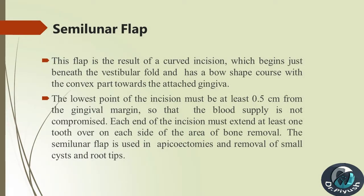Semilunar Flap: This flap is the result of a curved incision which begins just beneath the vestibular fold and has a bow-shaped course with the convex part towards the attached gingiva. The lowest point of the incision must be at least half a centimeter from the gingival margin so that the blood supply is not compromised. Each end of the incision must extend at least one tooth over on each side of the area of bone removal. The semilunar flap is used in apicoectomies and removal of small cysts and root tips.